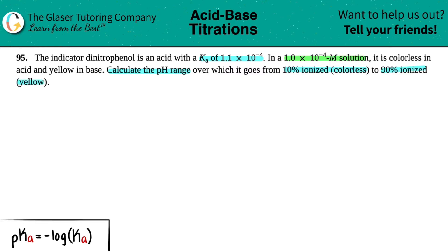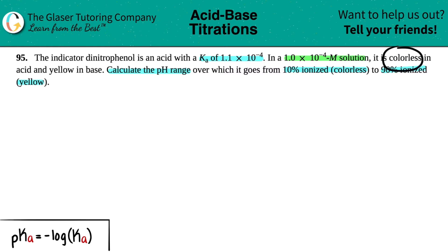So it seems here that we're dealing with an acid. They did say that dinitrophenol is an acid, and dinitrophenol is not one of my six strong acids. So this has to be a weak acid, and they gave us a specific Ka for it. Now they are talking about that when it's colorless, it's going to be an acid, and when it's yellow colored, it's going to be a base. This is an indicator, so it changes colors at different pHs.